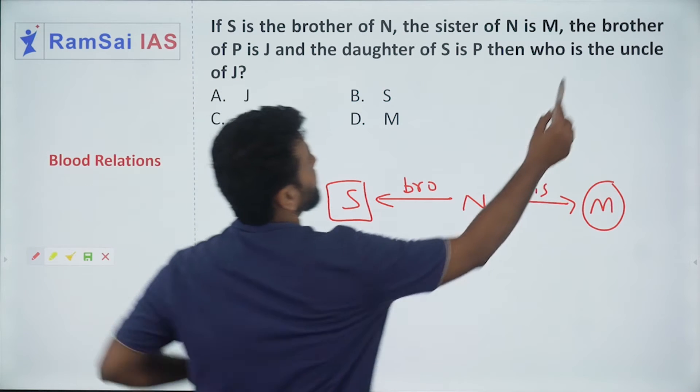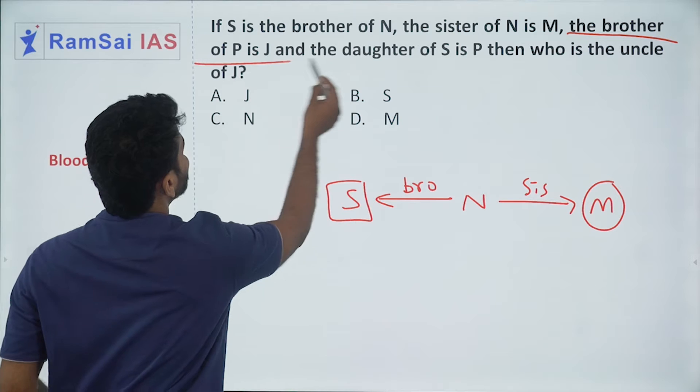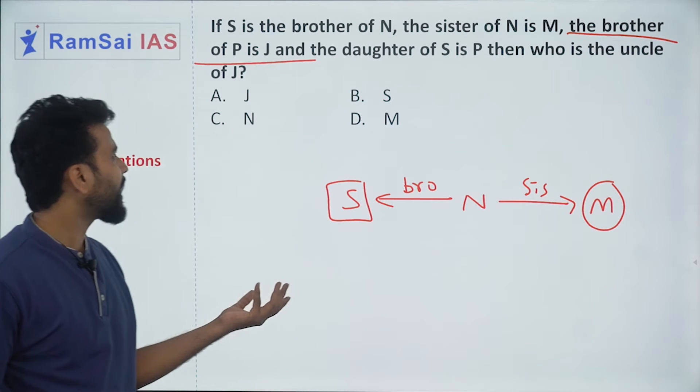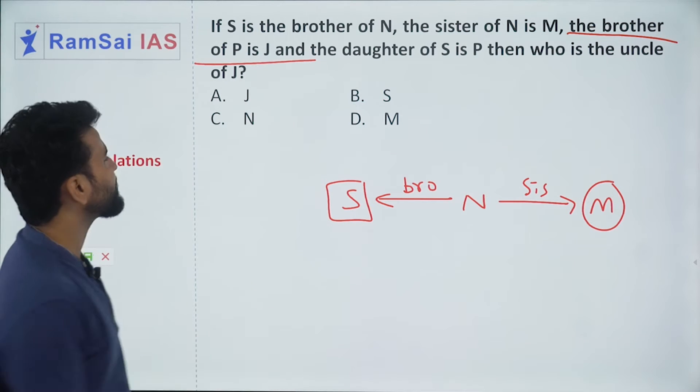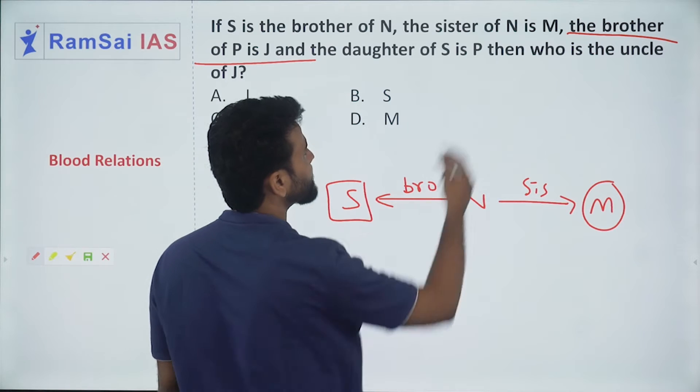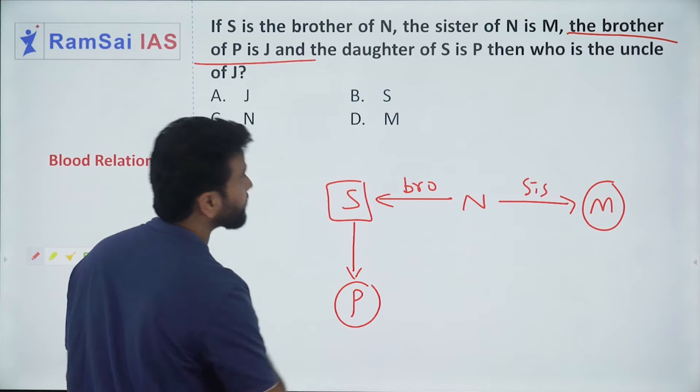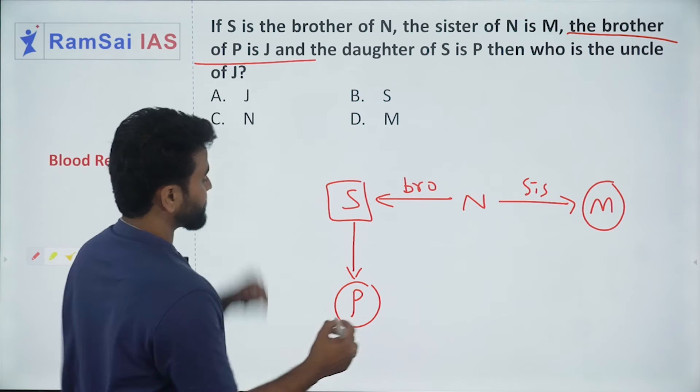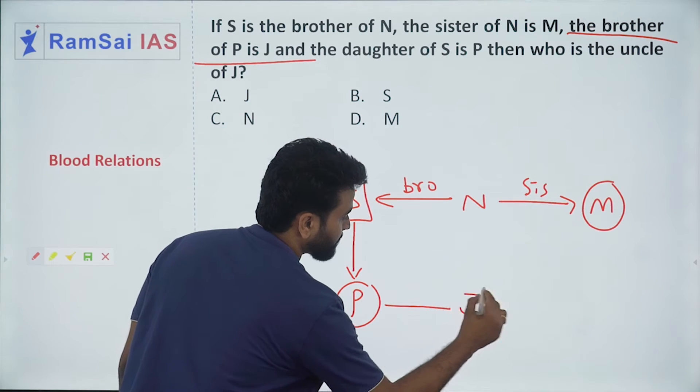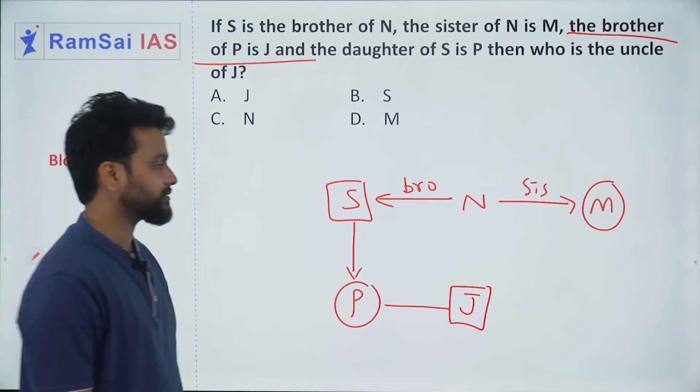The brother of P is J. Who is J and who is P here? I don't know. Let me read some more. The daughter of S is P. P is the daughter and the brother of P is J. So these are the relations.